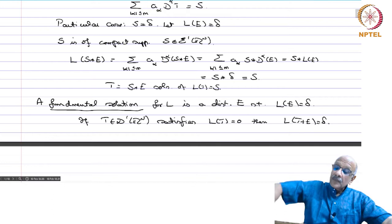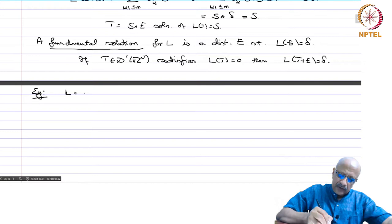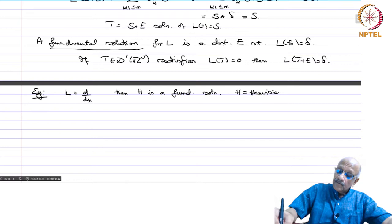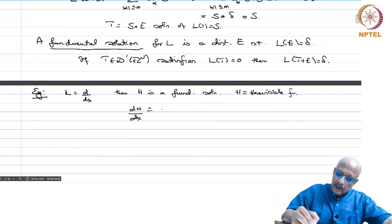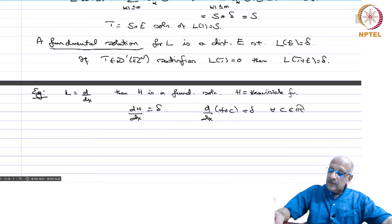Let us take the first example, which we have already seen. If L = d/dx, then H is a fundamental solution — H equals the Heaviside function — because we know that dH/dx = δ. Also, d/dx of (H + c) = δ for all c in ℝ, because the derivative of a constant is 0.